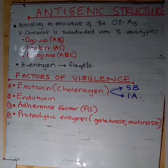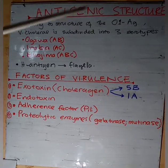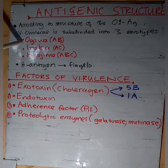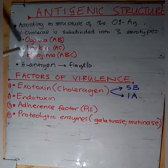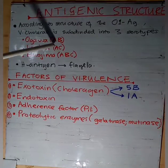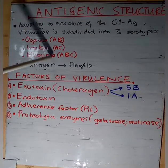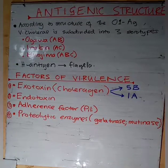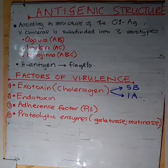Looking at the antigenic structure: according to the structure of the O1 antigen, Vibrio cholerae is subdivided into three serotypes. The first is Ogawa (AB), the second is Inaba (AC), and the third is Hikojima (ABC). There is also the H antigen for the flagella. So we have the O antigen, the H antigen, and the subdivision of the O antigen into these three serotypes.